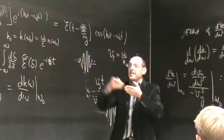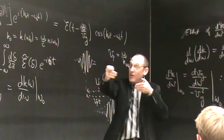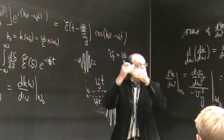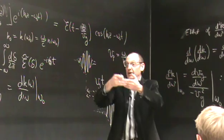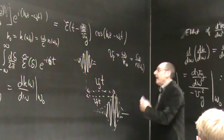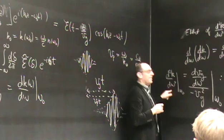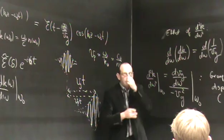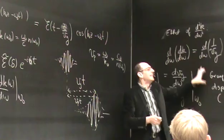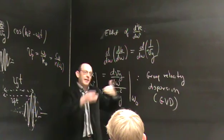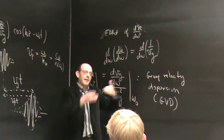In vacuum, an electromagnetic pulse does not spread longitudinally, because the relationship between omega and k is linear, giving a constant speed c. But in a dielectric, the pulse can spread, and the amount of spreading depends on the second derivative of k with respect to omega. We have a homework problem on pulse propagation in optical fibers, where group velocity dispersion limits the rate at which you can transmit information, because pulses eventually bleed into one another.